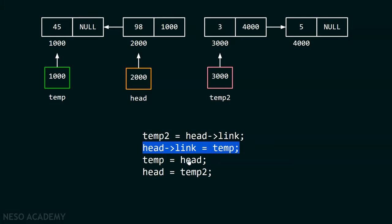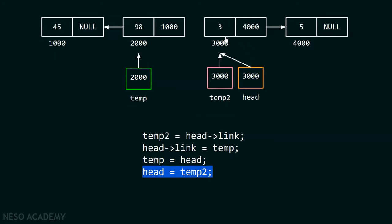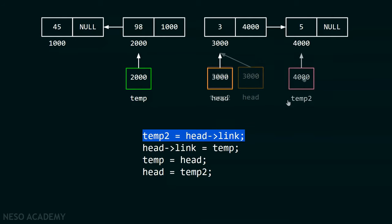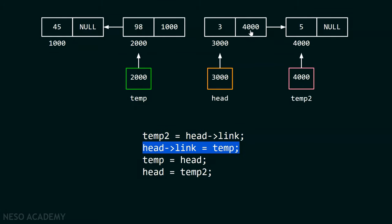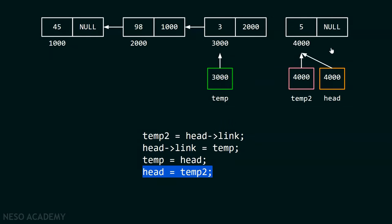After updating the second node, we update temp and move head to the third node. We repeat the process again: temp2 is updated to point to the fourth node, then the third node's link is updated using head.link = temp. Then temp is updated to point to the third node, and head moves to the fourth node.